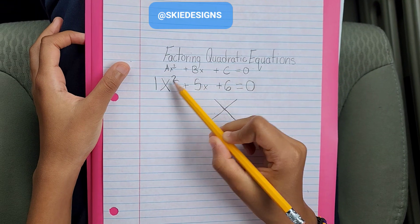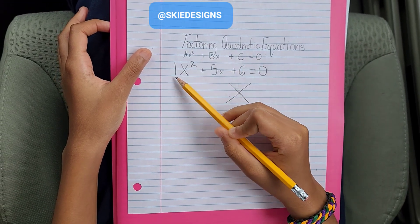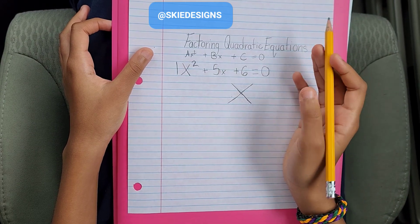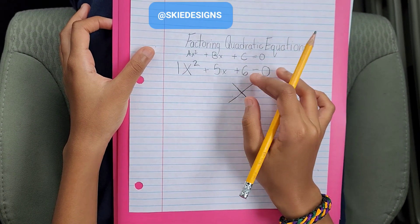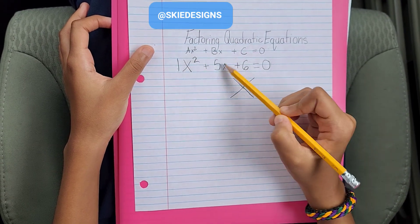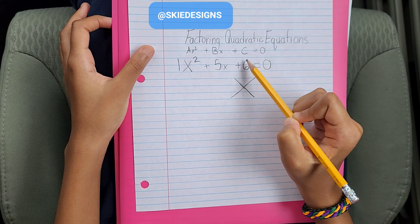I know I said x squared plus 5x plus 6 is equal to 0, but what's the 1 doing here? Well, whenever you have a variable, there's always an invisible number. If there's no written number, there's always going to be a 1. So that will be our a. 5 is b and 6 is c.